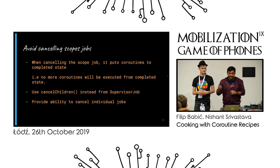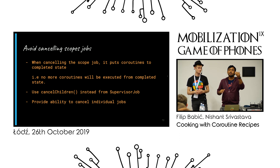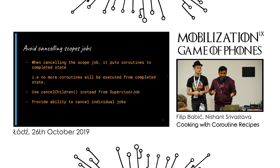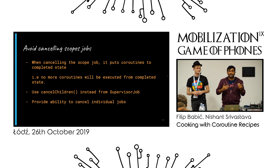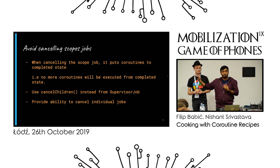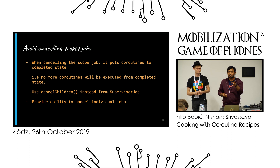The ideal way is to use SupervisorJob and call cancelChildren on it. That way you manage everything using the supervisor job as parent and cancel children on the job — not on the scope. This also gives you the ability to cancel individual jobs, which is an added advantage. Coroutines run in parallel across threads, and you might want to cancel only the ones on the main thread while keeping background coroutines running.